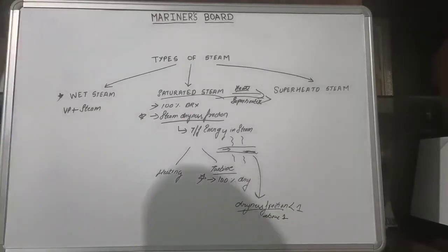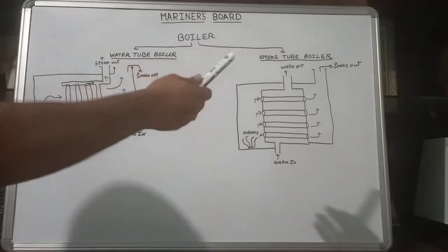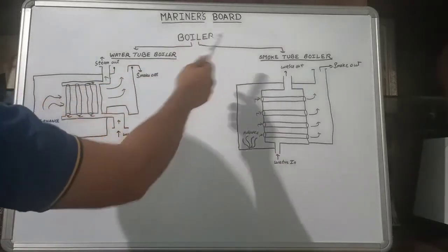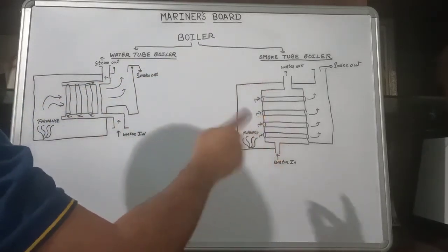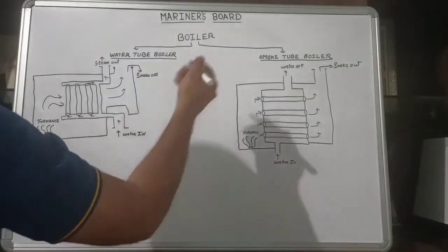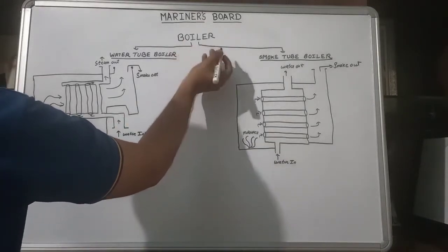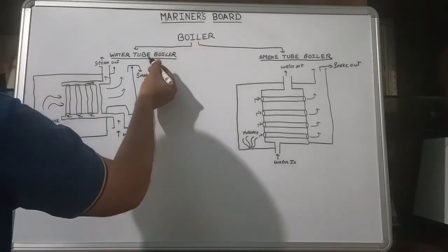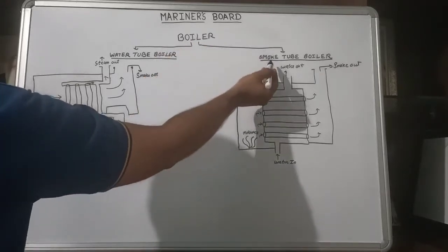Now we would like to start with boilers. The most important basic of boilers is the type of boilers. There are basically two types of boilers found on board nowadays: the water tube boiler and the smoke tube boiler.